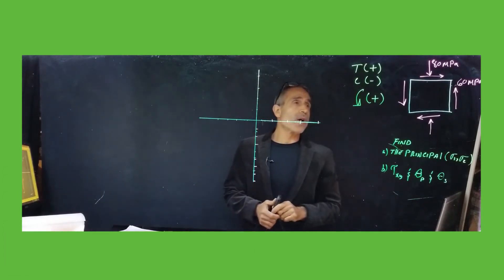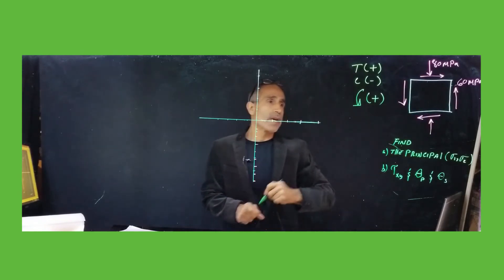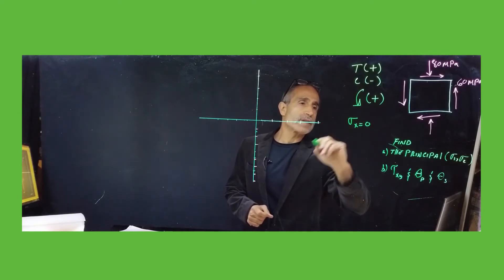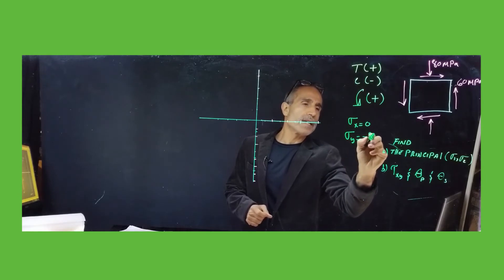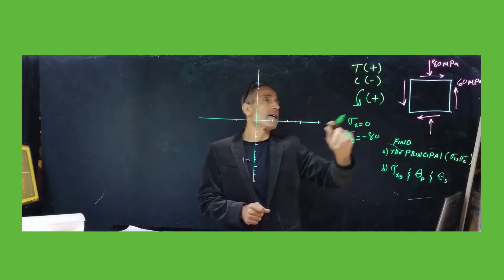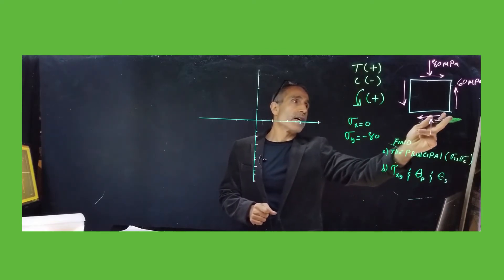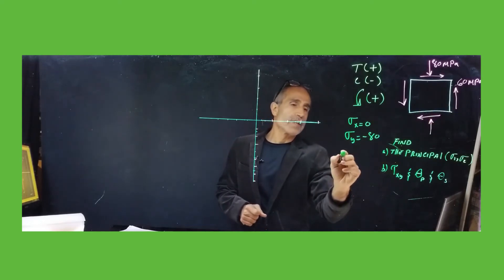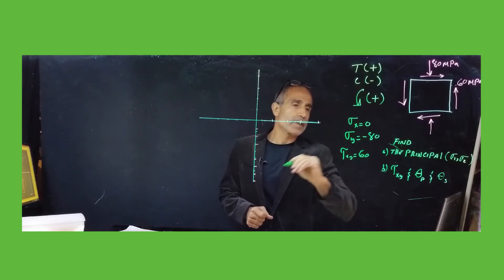Looking at our values: sigma x is equal to zero, sigma y is minus 80 MPa since it's compression, and shear — on one side the rotation is counterclockwise, so it's positive — tau xy is plus 60 MPa.